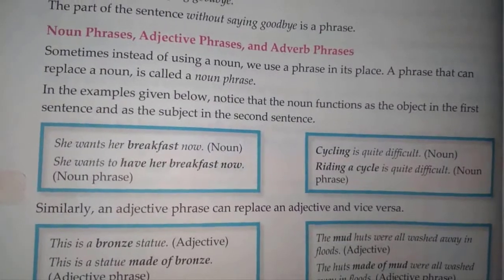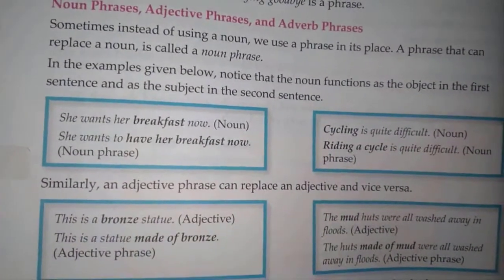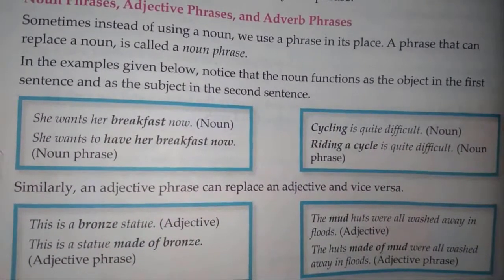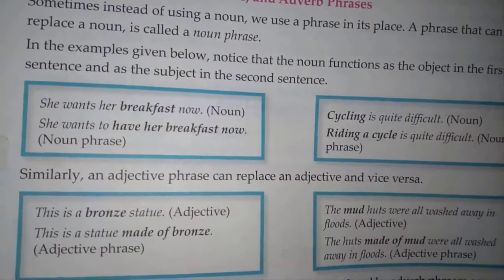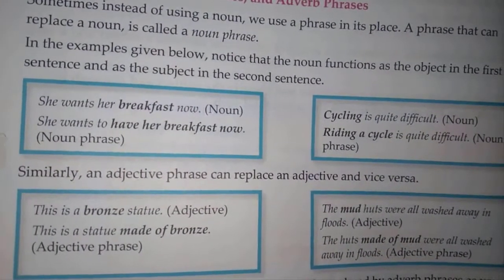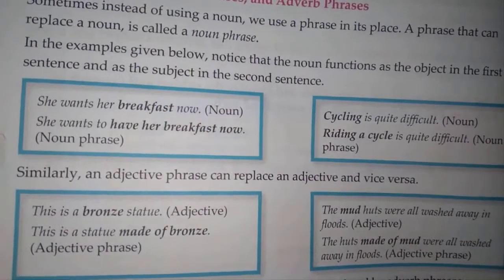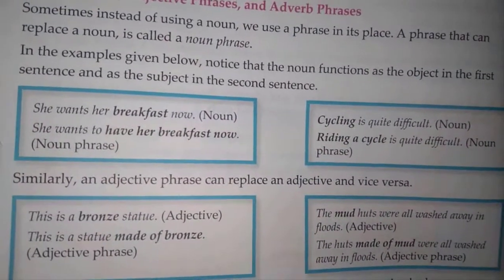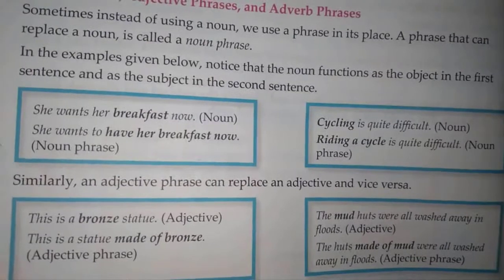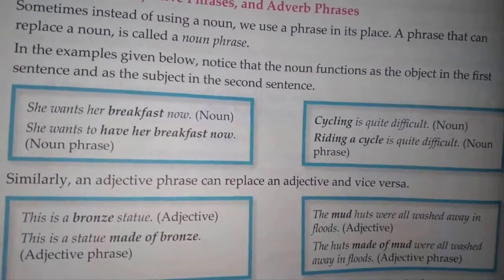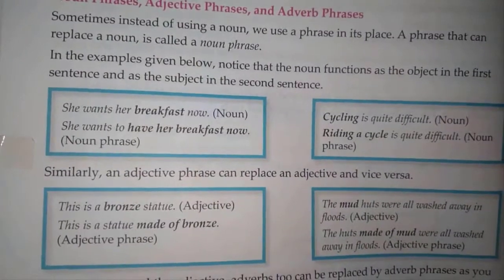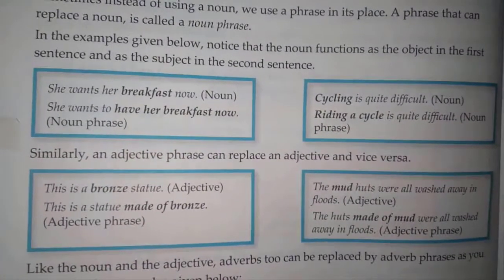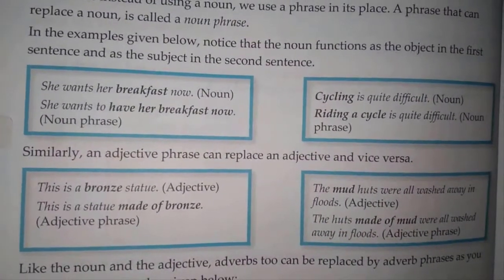Both examples given are noun phrases. Now, adjective phrases. 'This is a statue made of brass.' The adjective phrase here is 'made of brass.' Both examples of adjective phrase: 'The hut made of mud' — these are adjective phrases.